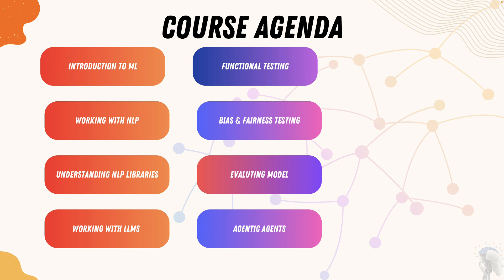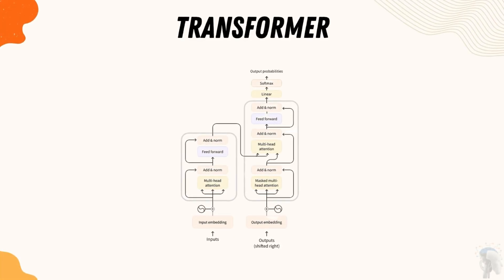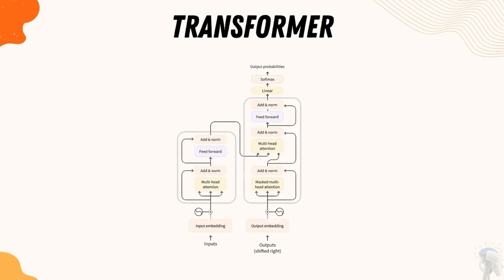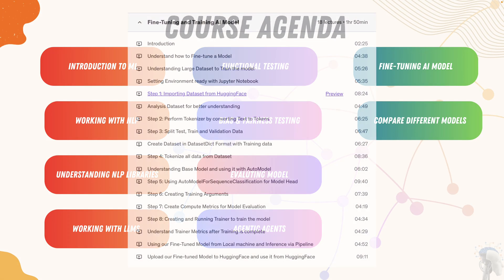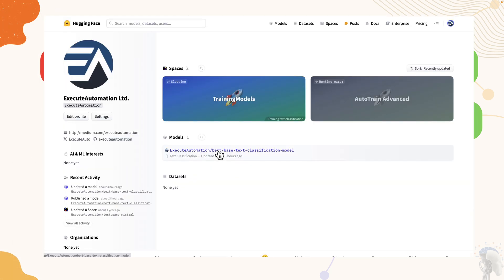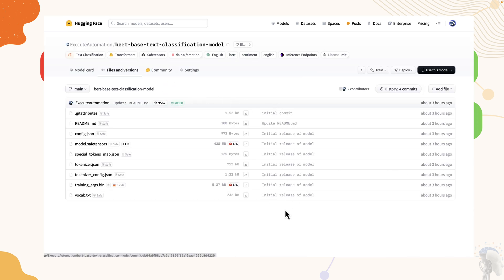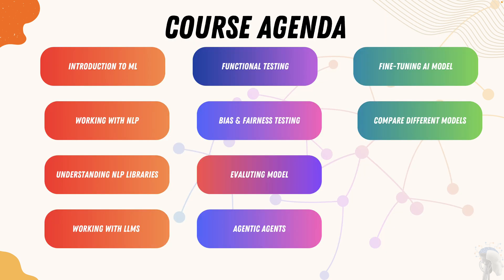Finally, after getting all the fundamental details of large language models and transformer libraries, we start with fine-tuning the AI model — using a base model, applying the model head and classification head, fine-tuning and training the model, and creating a local large language model for inferencing. We'll also upload this model to the HuggingFace library so anyone in the world can use it, and we'll compare different models with different architectures to evaluate which is most useful for a given purpose.